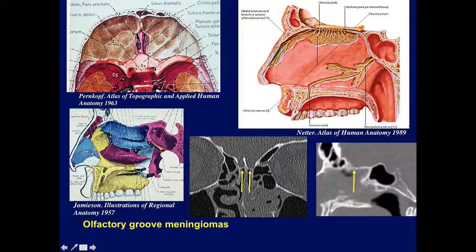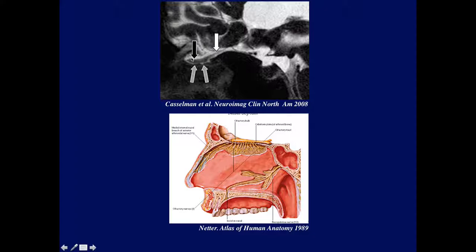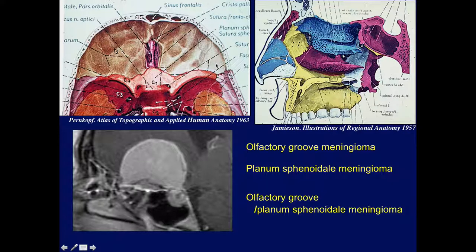Olfactory groove meningiomas arise in the region where the olfactory tract and bulbs sit, but the posterior extent is not always clear. Some people call this whole area an olfactory groove meningioma or a planum sphenoidale meningioma. On the sagittal MR, here's the olfactory bulb and tract — this is the region for the olfactory groove meningioma. A very large meningioma covering the entire floor of the anterior fossa may be called an olfactory groove, planum sphenoidale, or combination meningioma. I'll show the distinction later.